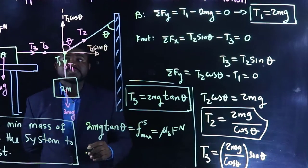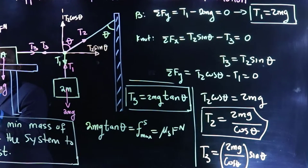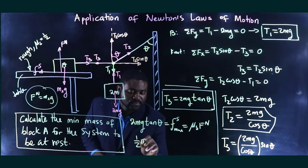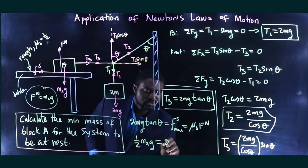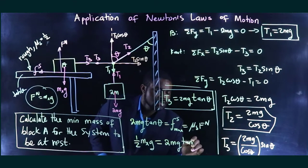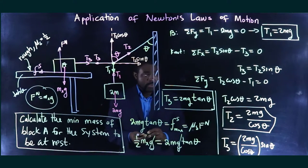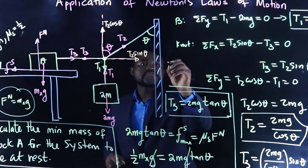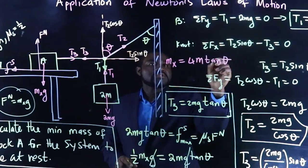But what do we know? We know that the sum of forces in the y direction is 0. That means that Fn is equal to Mxg. So, we will then have one half Mxg because mu is one half. This will be equal to 2Mg tangent of theta. This g cancels with this g. And we will end up with Mx equal to 4M tangent of theta.